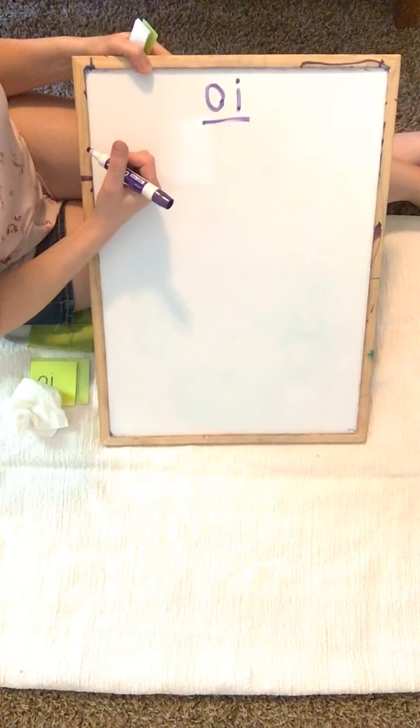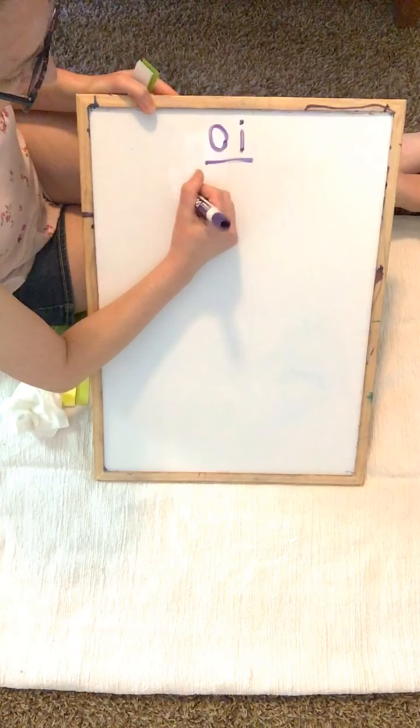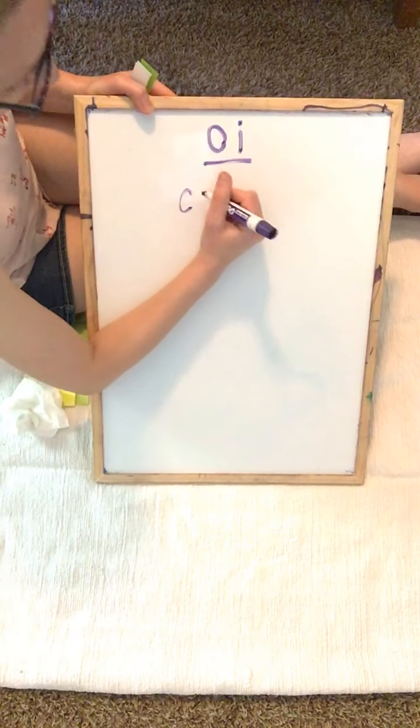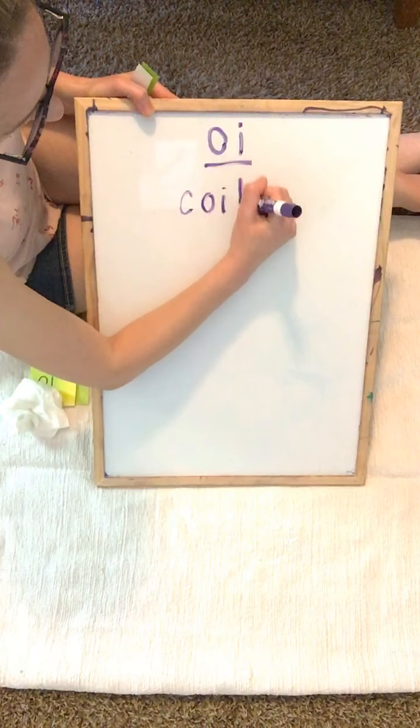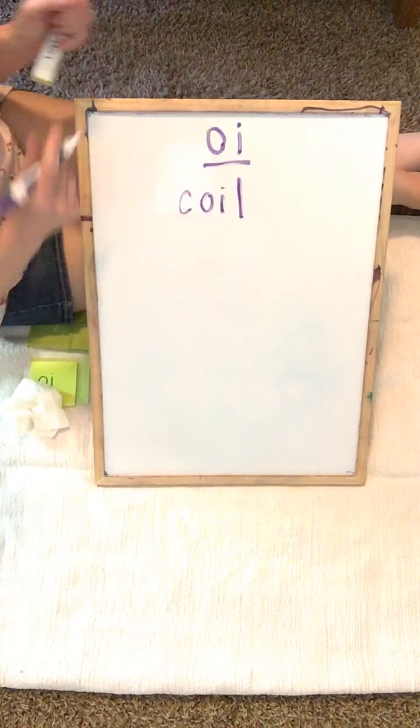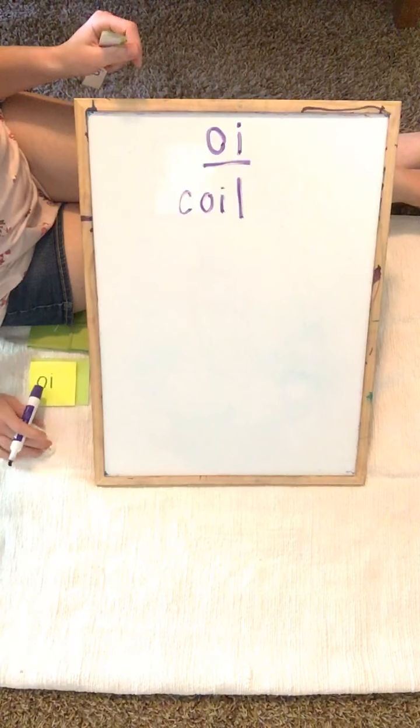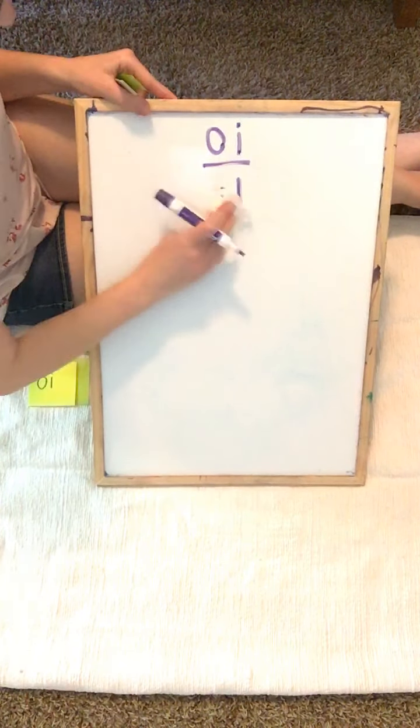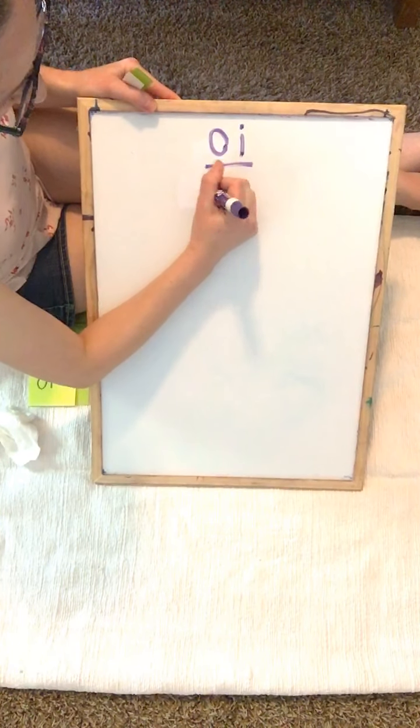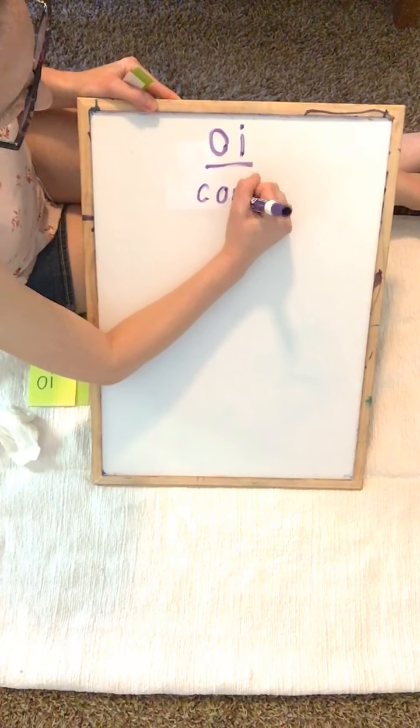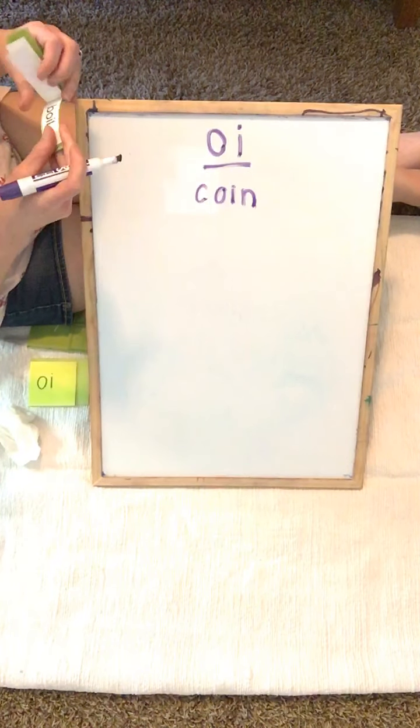Coin. We hear K at the beginning, OI in the middle, L at the end. Oh well, the word was coin, not coil. Coil is a word, but we want to spell coin. K, OI, N. We hear N at the end, not L. My bad.